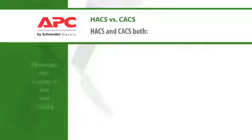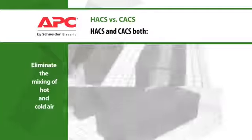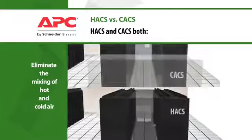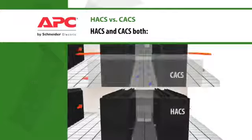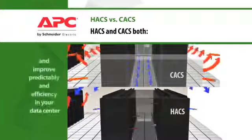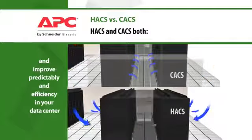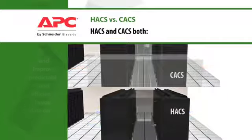Both the hot aisle and cold aisle containment systems eliminate the mixing of hot and cold air. By keeping these airstreams separate, the cooling system can run with more predictability and efficiency.